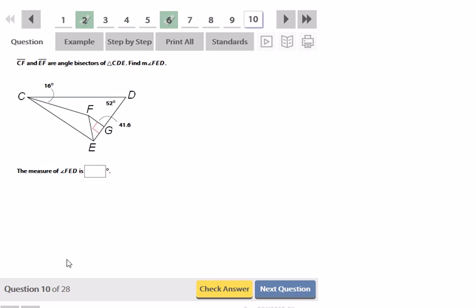CF and EF are angle bisectors. So find the measure of angle FED. We're looking for the measure of that angle there. So if CF is an angle bisector, then I know that this is 16 degrees here as well. And EF is an angle bisector as well. Even though they don't tell me how many degrees are there, I know that FEG is going to be the same as FEC.